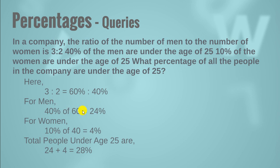For men, 40% of 60 is equal to 24%, which means that 60 multiplied by 40 divided by 100, that is 40% of 60. And for women, 10% of 40 will be 40 multiplied by 10 over 100, that is 4%. Total people under age 25 are 24 plus 4, that is 24% men and 4% women. So the number of people under age 25 are 24 plus 4, 28%. 28% people are under age 25 irrespective of their genders, whether they are male or female.